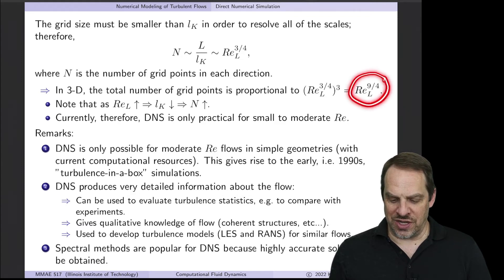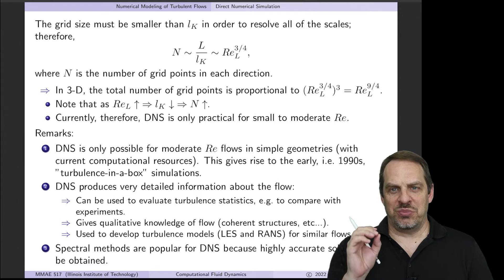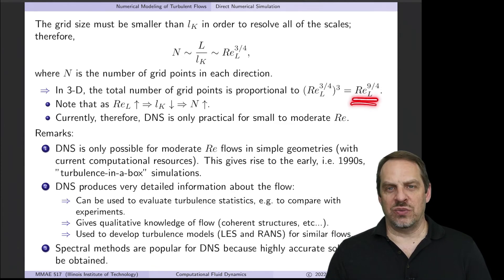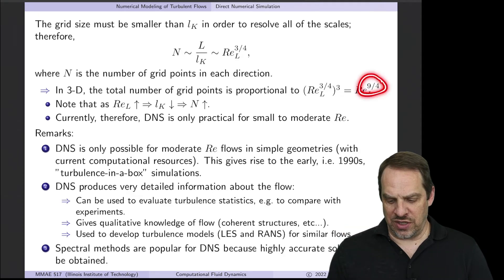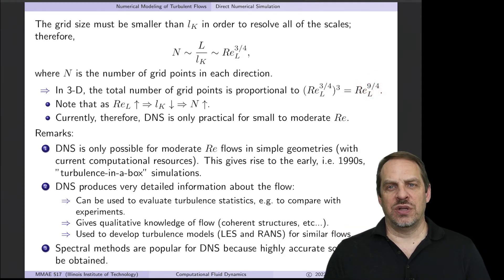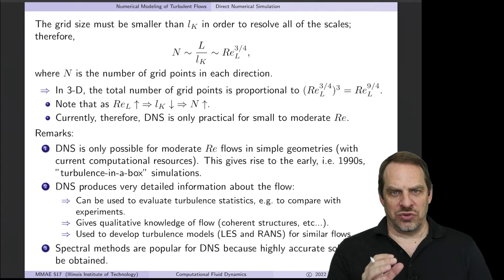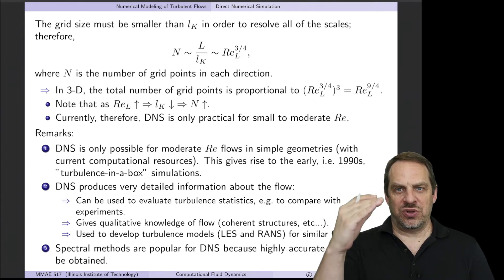So in 3D, where you need N points in all three directions, the total number of grid points then is proportional to Re_L to the nine fourths. That's the third power of Re_L to the three quarters. So that's a lot of points.